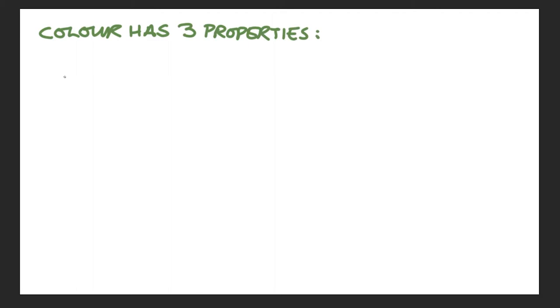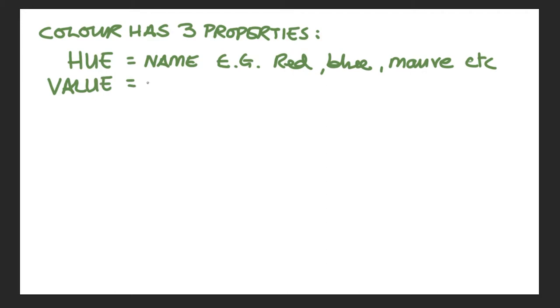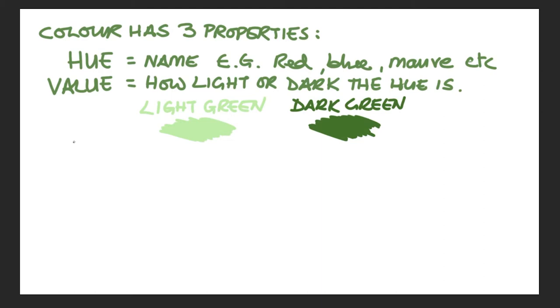So color has three main properties. Hue. So this refers to the name of the color. So for example red, blue, mauve, pink, violet. Secondly we have the value. Value is how light or dark the color is, whether it's in light or whether it's in shadow. Whether it's a light color or whether it's a dark color. So you can have light green or dark green.